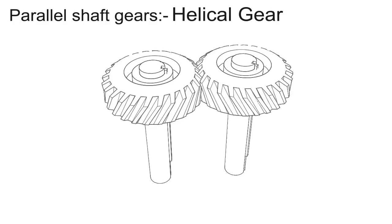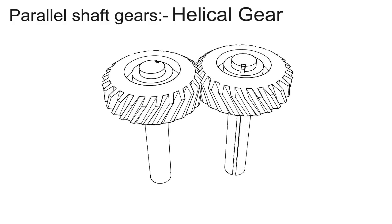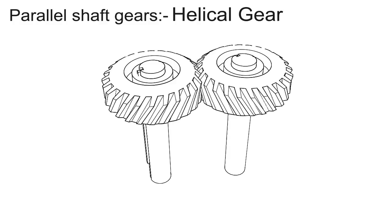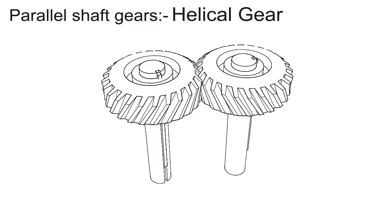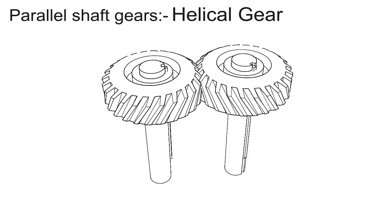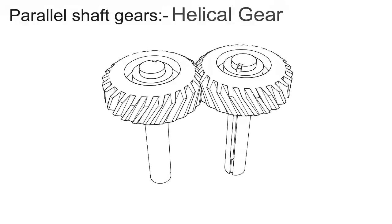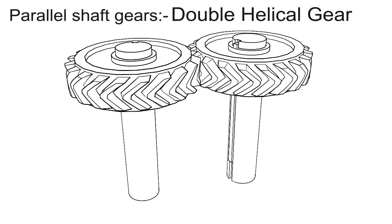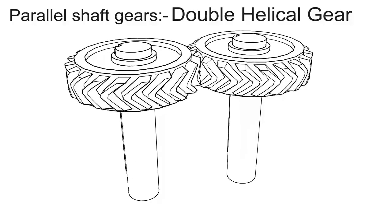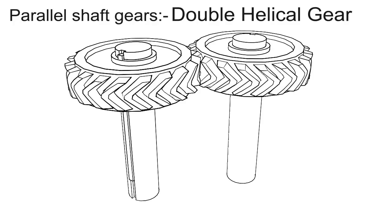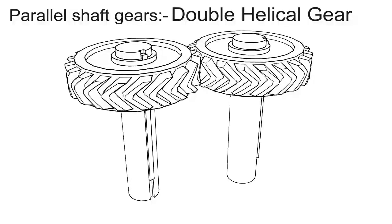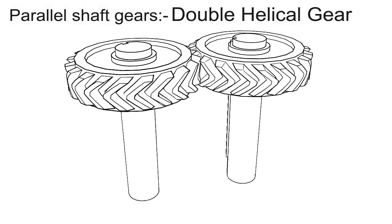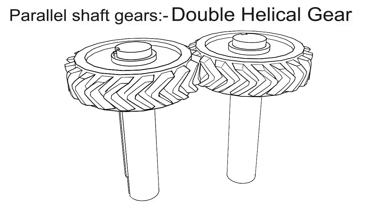Helical gear. In helical gears, the teeth are curved, each being helical in shape, and they are less efficient than spur gears. A double helical gear is equivalent to a pair of helical gears secured together, one having a right-hand helix and the other a left-hand helix. They are mostly used in heavy machinery.